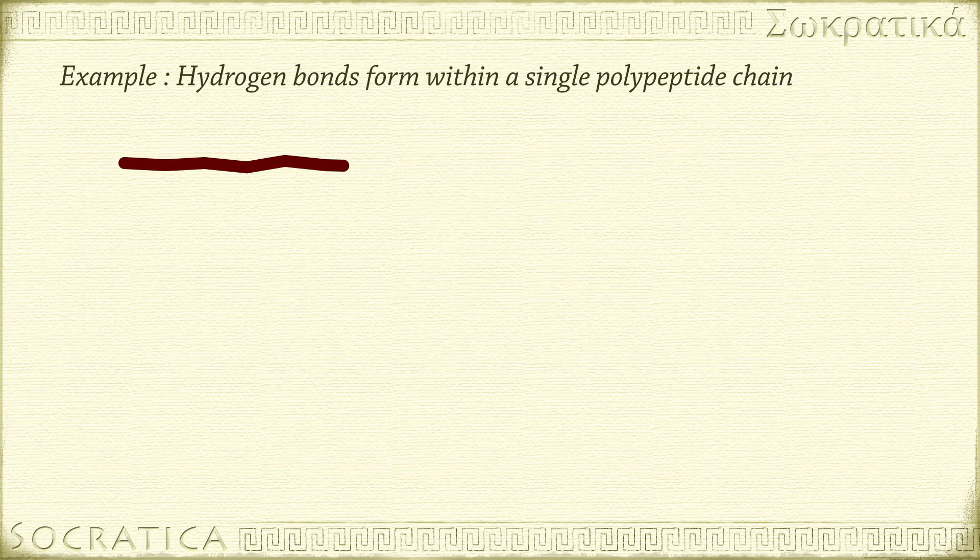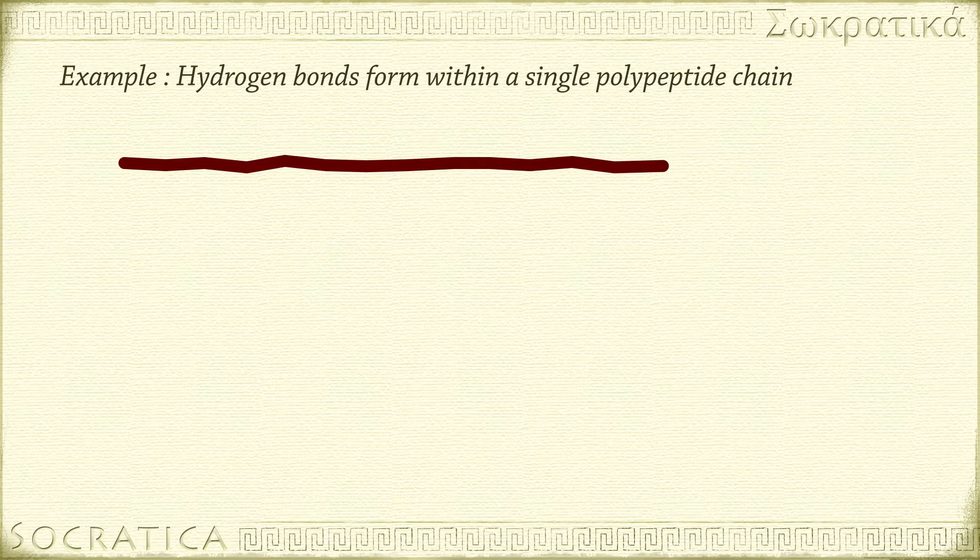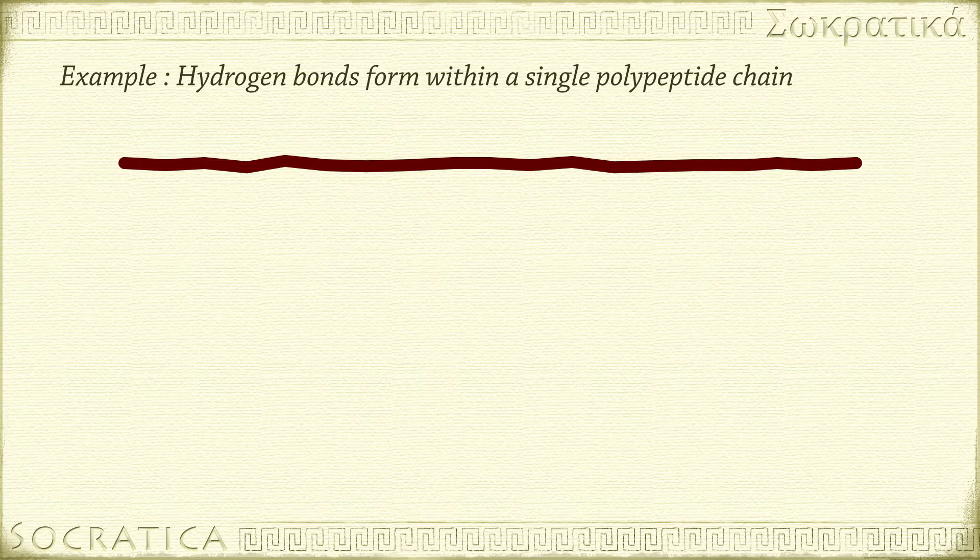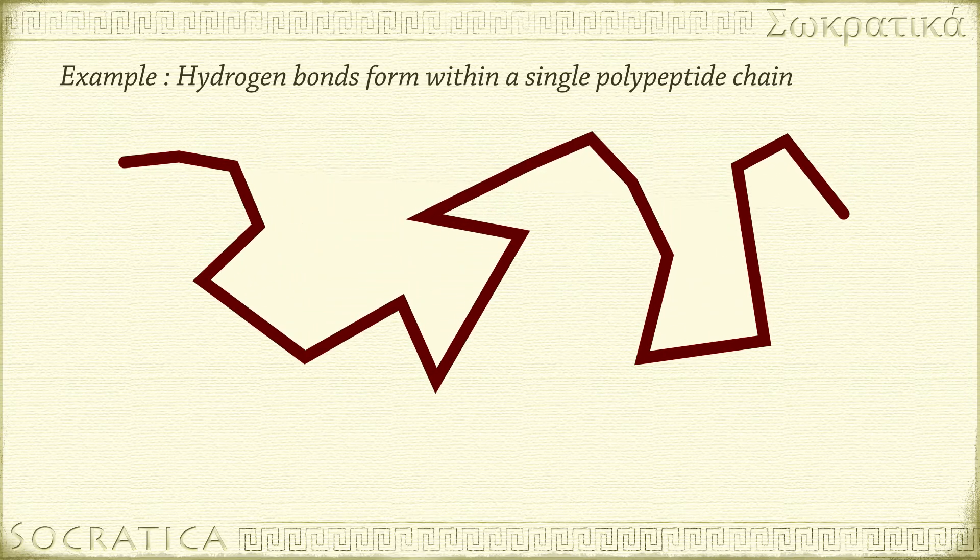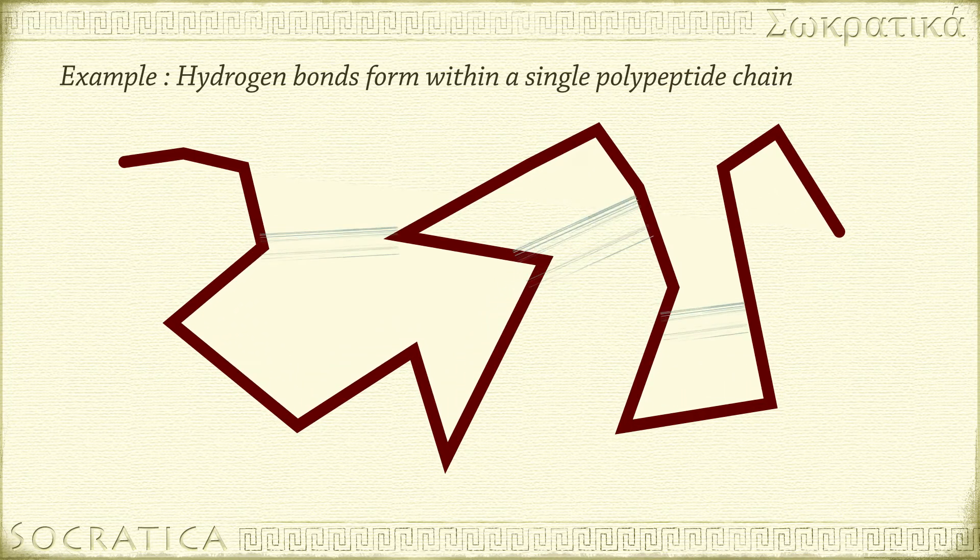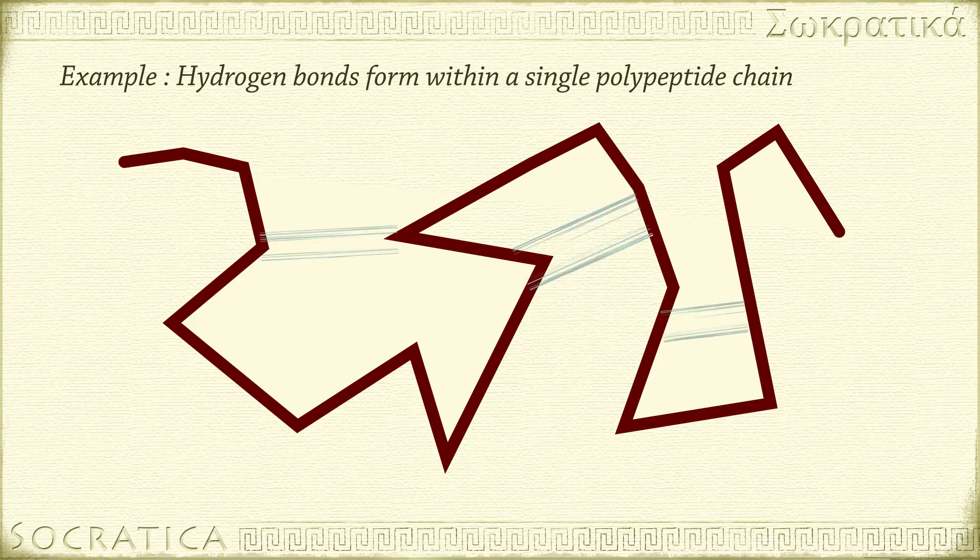For instance, if you study biochemistry, you'll learn about how hydrogen bonds are formed within a single polypeptide chain—that is, a string of amino acids—as it folds up to form a protein. So that's a case of hydrogen bonds forming between different parts of the same molecule.